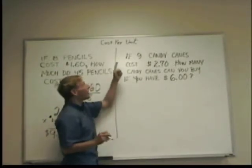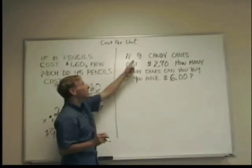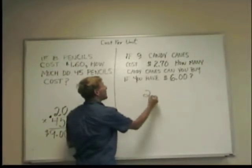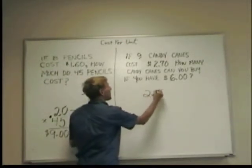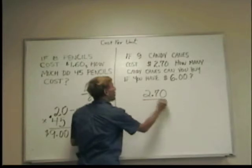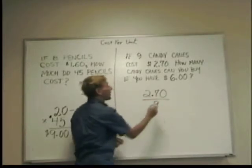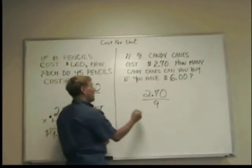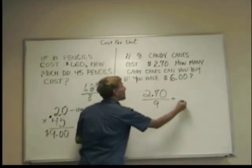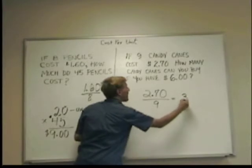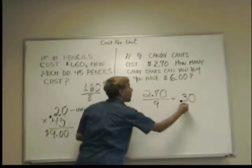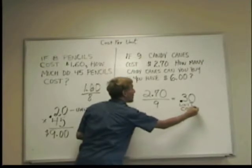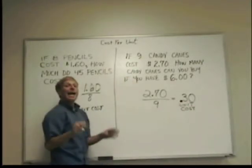If I know I have nine and that costs two seventy, I divide the two seventy by nine, and you could do this on the calculator or long division, you will get thirty cents for each candy cane. Thirty cents is my unit cost.